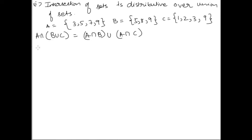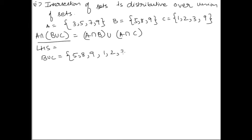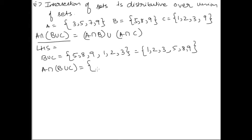Let's do the LHS. For B union C, we list out B: {5, 8, 9}, then C without repeating anything: 1, 2, and 3. In ascending order: B union C = {1, 2, 3, 5, 8, 9}. Now A intersection (B union C) — what are the common elements between A and B union C?